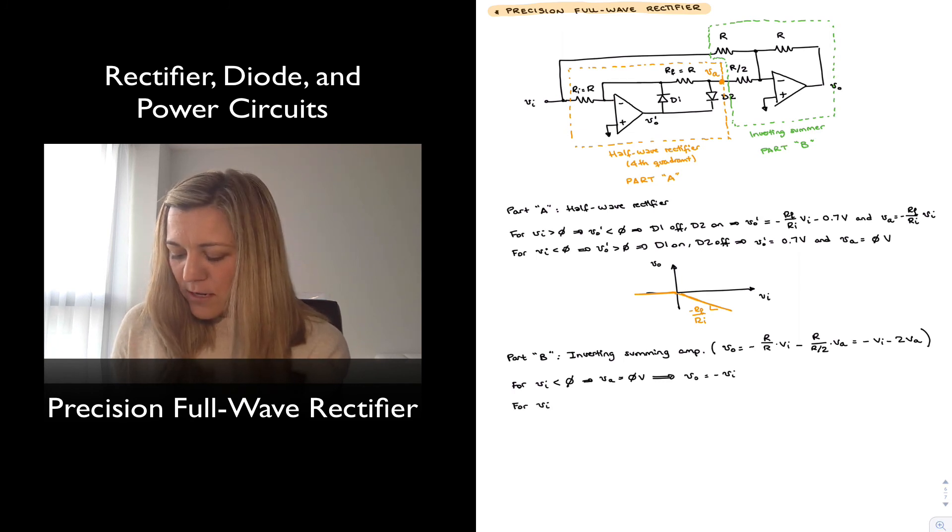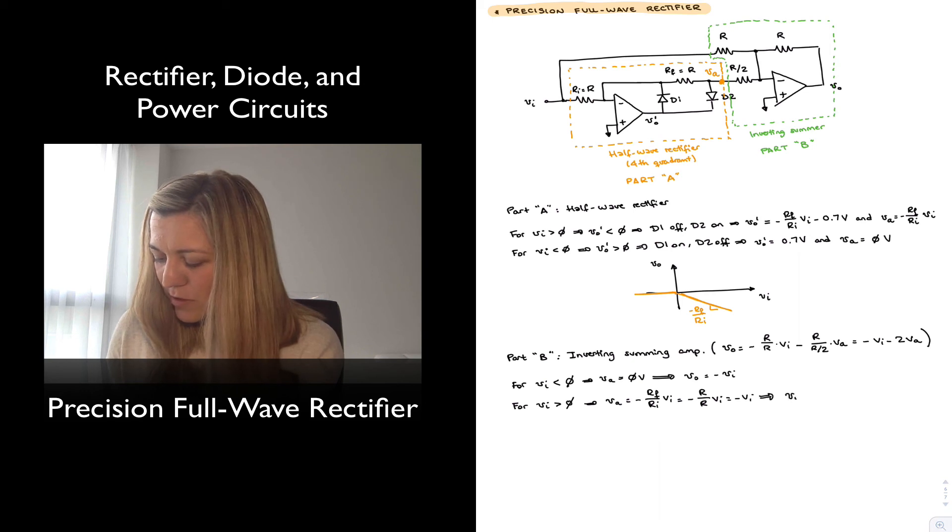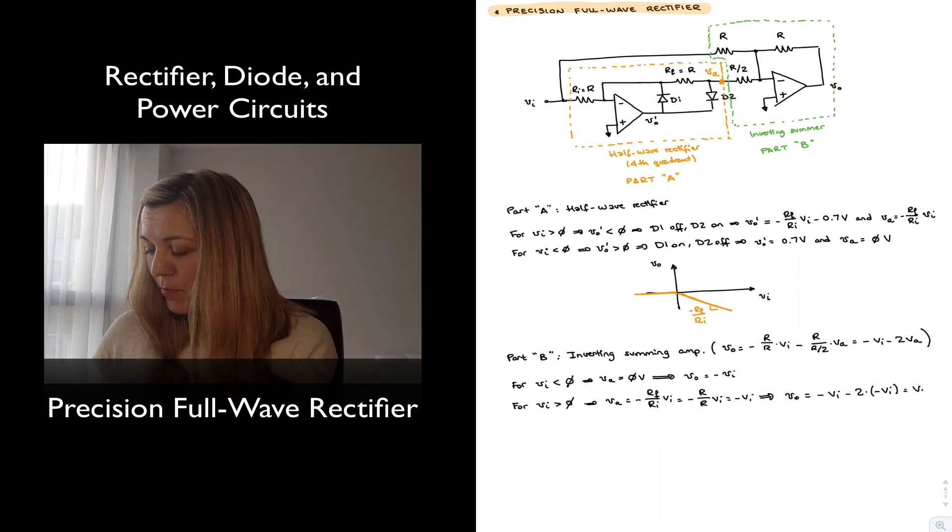For positive values of Vin, we have that VA was equal to negative Rf over Ri times Vin, and if we replace the values of Rf and Ri here now, we will just have negative R over R times Vin, so therefore negative Vin. And so my Vout in this case will be equal to negative Vin minus 2 times, and VA is also negative Vin. So that means minus Vin plus 2 Vin or positive Vin.